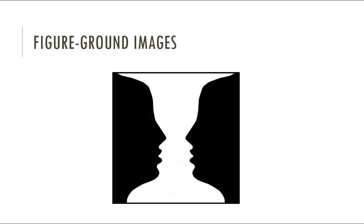I want to start out this lecture by showing you some pictures. Some of you may have seen these before. They're called figure-ground images because they look different if you focus on the figure or the background. Look at the picture on the screen in front of you now. Depending on how you're looking at it, you should see one of two things: either a white vase in the middle of the image, or two black faces looking at each other. I'll give you a moment to look at it and see whether you can see both of these things.